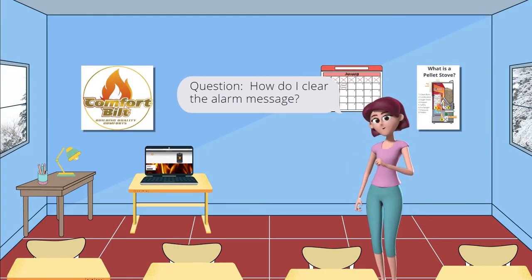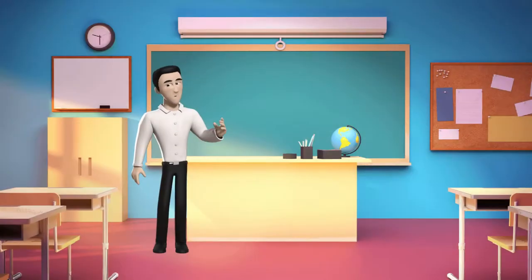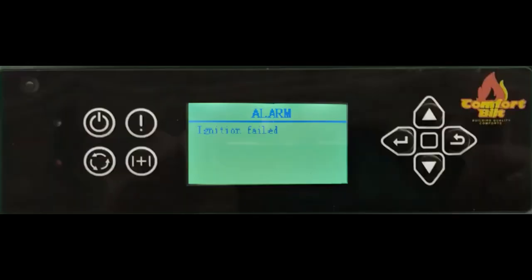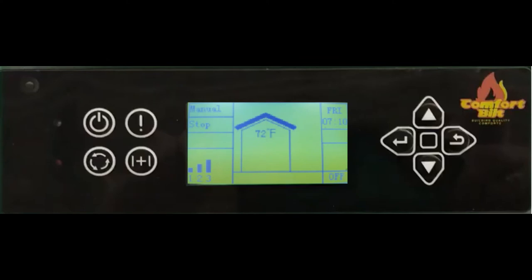How do I clear the alarm message? When an alert or fault code displays on the screen, you first need to acknowledge it so that the stove will return to its home screen. To do this, simply press and hold the on-off button at the top left corner of the control panel for several seconds. This will clear the alert message and display the home screen again.